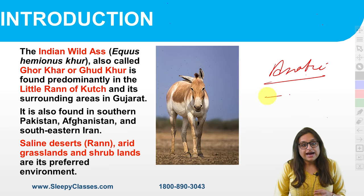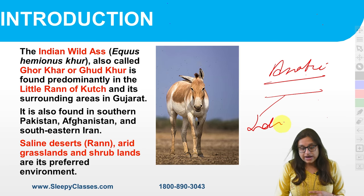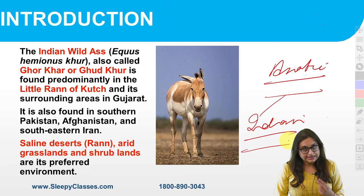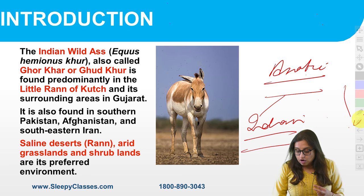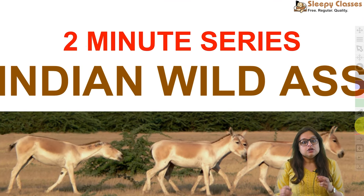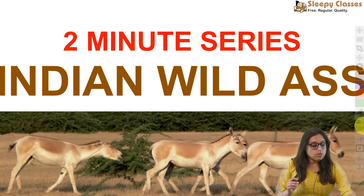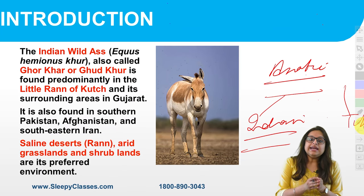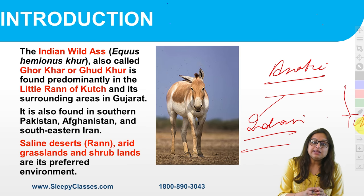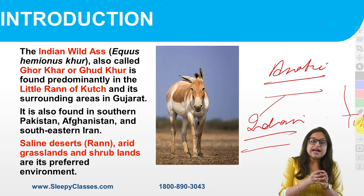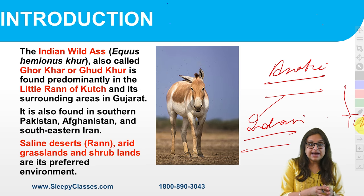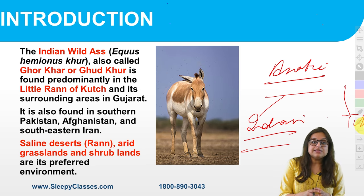Asiatic Wild Ass has two sub-species: Indian Wild Ass, which we will cover in this video, and Tibetan Wild Ass. The Tibetan Wild Ass is also found in India — in Ladakh. And the Indian Wild Ass, the other sub-species, where do you find it in India? Only in the Little Rann of Kutch.